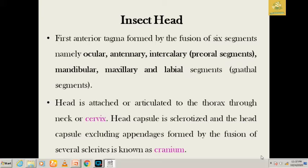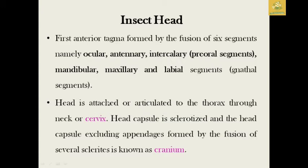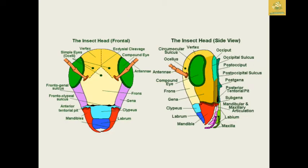The head is attached to the thorax by the neck region, which you can call the cervix. The head is a sclerotized capsule, and the head capsule excluding appendages, formed by the fusion of several sclerites, is known as the cranium. The cranium refers to the central structure defined by the lines between two segments.